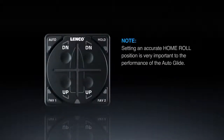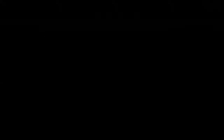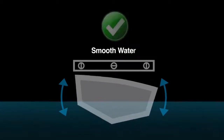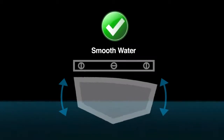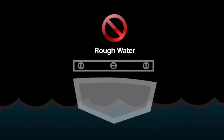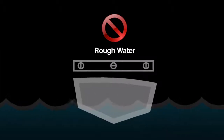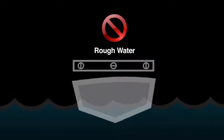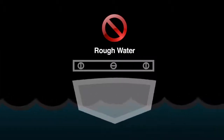Please note: setting an accurate home roll position is very important to the performance of the auto glide. Lenko Marine recommends setting the home roll default position in smooth water conditions. If the boat is rocking back and forth when the home roll default position is calibrated, the home roll position may be slightly skewed to port or starboard.